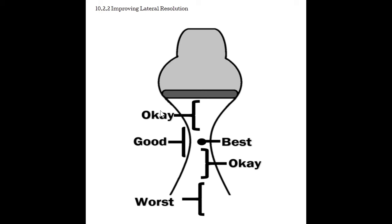Lateral resolution changes with depth because the beam width changes with depth. We have relatively OK lateral resolution as the beam comes out, getting better as the beam narrows in the focal zone — that is really our good spot for anatomy placement. The best lateral resolution point is at the focus. As the beam diverges after the focus, we still have an OK region into the far field. Once the beam really begins to diverge widely, that's where our worst lateral resolution is. This is true for all transducers.